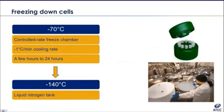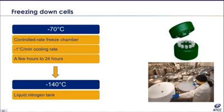Freezing cells is typically a two-stage process: cells are incubated at minus 70°C before being stored at minus 140°C. Cells must be cooled at a rate of about minus 1°C per minute, achieved with a controlled rate freezer or controlled rate chamber. The length of time at minus 70°C depends on the type of chamber used. After spending the appropriate time at minus 70°C, vials must be transferred to minus 140°C for long-term storage in liquid nitrogen tanks.